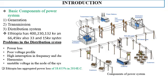Here is the introduction. As you know, the power system has three main components: generation, transmission, and distribution systems. Distribution systems can be complex and face many problems such as higher power loss, poor voltage profile, higher interruption, and unstable voltage.